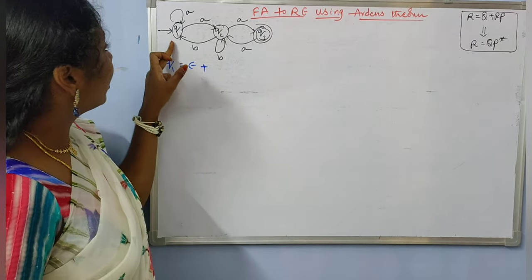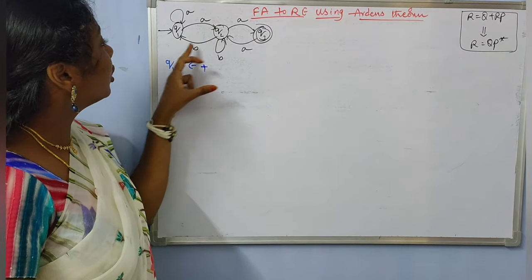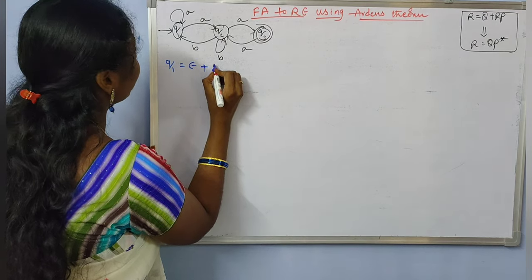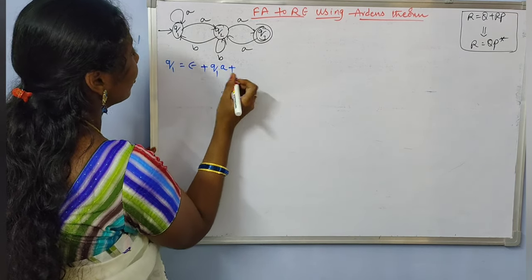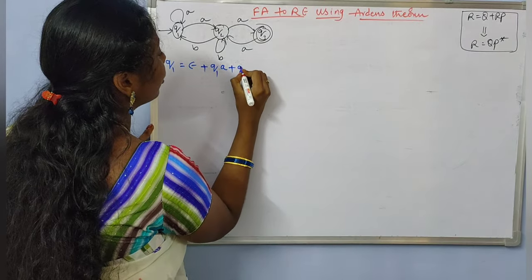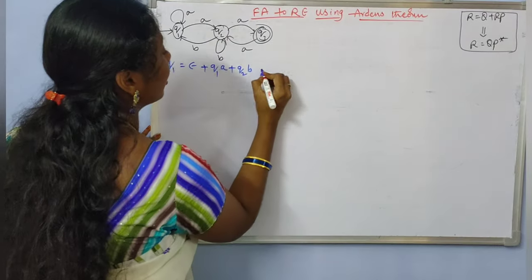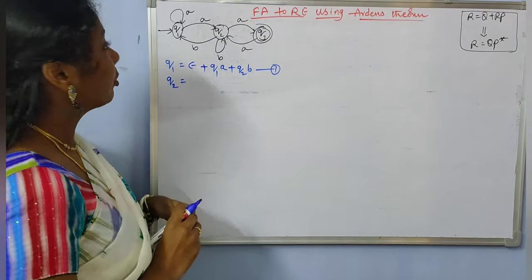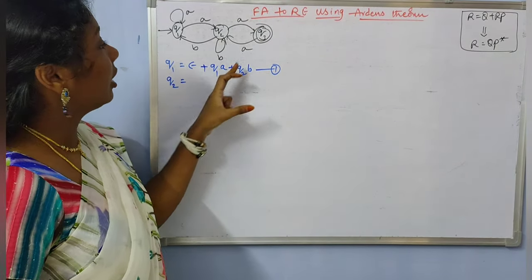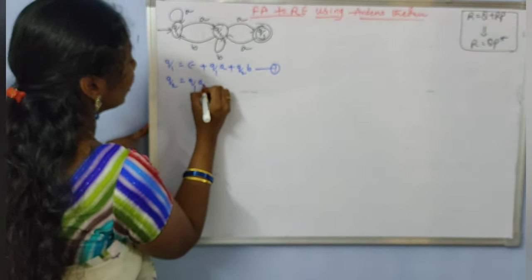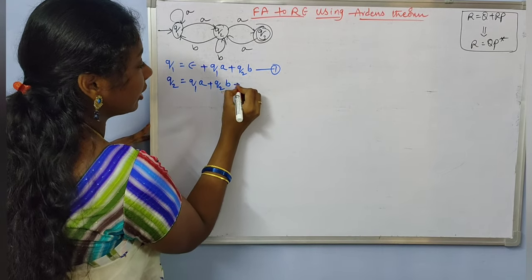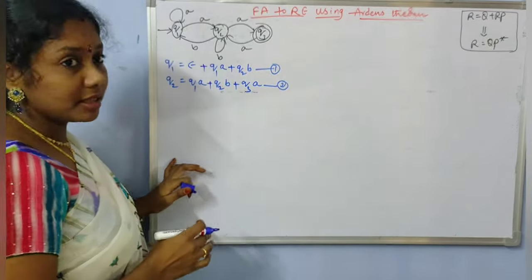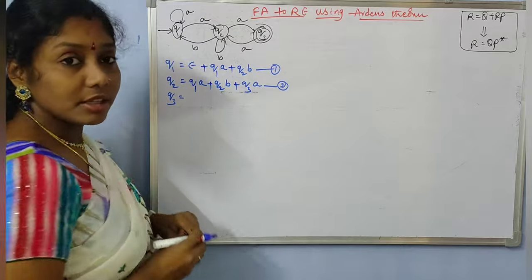For Q1, the incoming transitions are A and B. So the reachability equation for Q1 is: Q1 = epsilon + Q1·A + Q2·B. Let us say this is equation 1. Next for Q2: Q2 = Q1·A + Q2·B + Q3·A. We also need to write the reachability equation for state Q3.